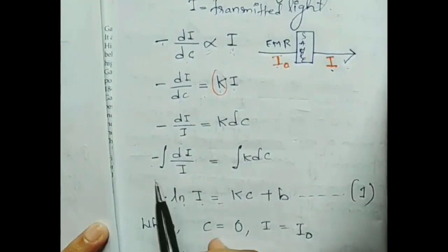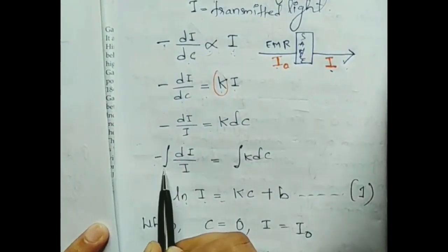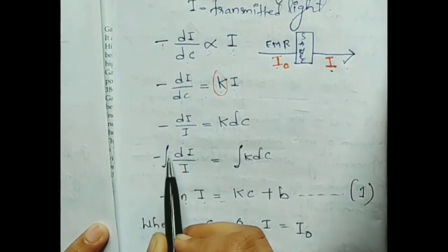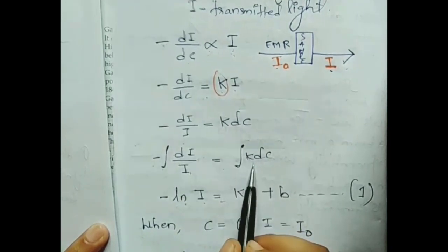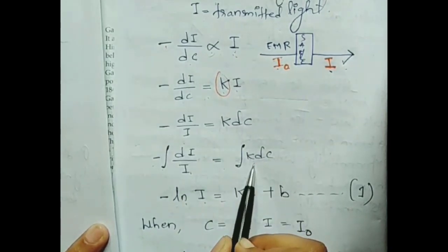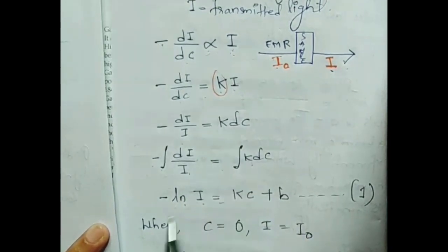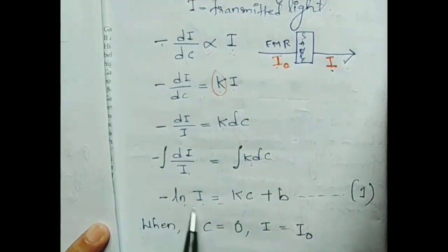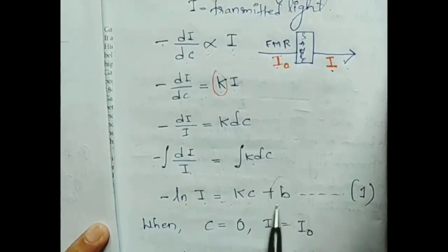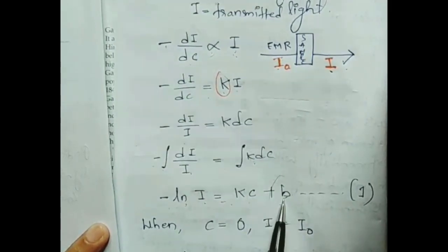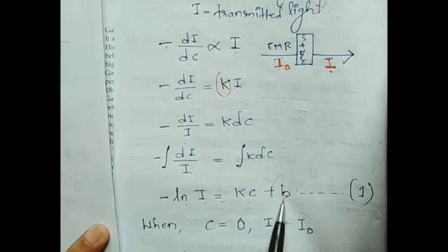Then, minus dI by I equals K dC — this is just rearranging the equation. Integrating this equation we get: minus integration of dI by I equals integration of K dC.